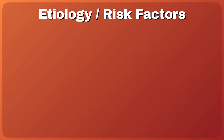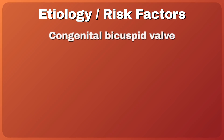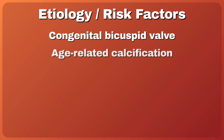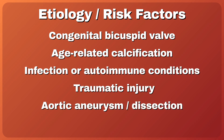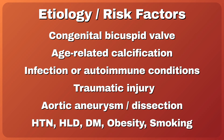There are congenital and acquired conditions that can negatively affect the function of the aortic valve. Some people are born with a bicuspid valve, in which there are only two leaflets instead of three. As people age, calcifications can form which stiffen or narrow the valve. Infections or autoimmune conditions like endocarditis or rheumatic heart disease can damage the valves. Traumatic injuries, aortic aneurysms, and dissections are a few other causes. The usual cardiovascular risk factors — hypertension, dyslipidemia, diabetes, obesity, and smoking — can also contribute to valvular heart disease.